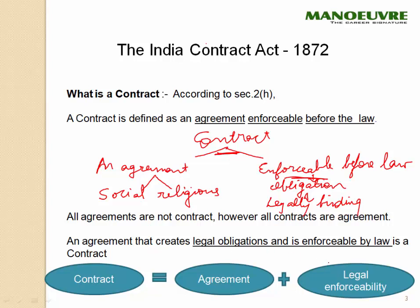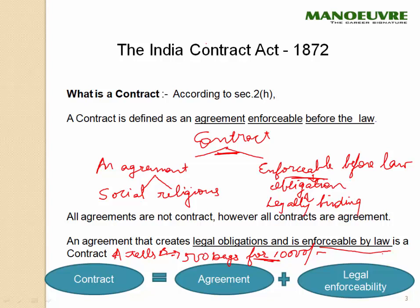When an agreement is legally binding, then only it comes into the category of a contract. So a contract is agreement plus legal enforceability — there is a legal obligation, a legal binding. For example, if A tells B 'I will sell you 500 bags of wheat for Rs. 10,000,' it is a valid agreement that can result in a contract, enforceable by law. If any party does not do their duty, the other can go to the court of law.